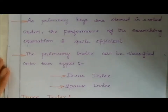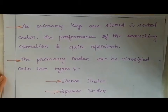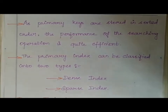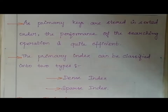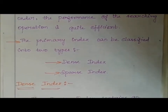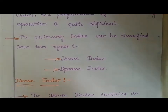Primary keys are stored in sorted manner, so the performance of the searching operation is quite efficient. The primary index can be classified into two types: one is dense index and the other is sparse index.